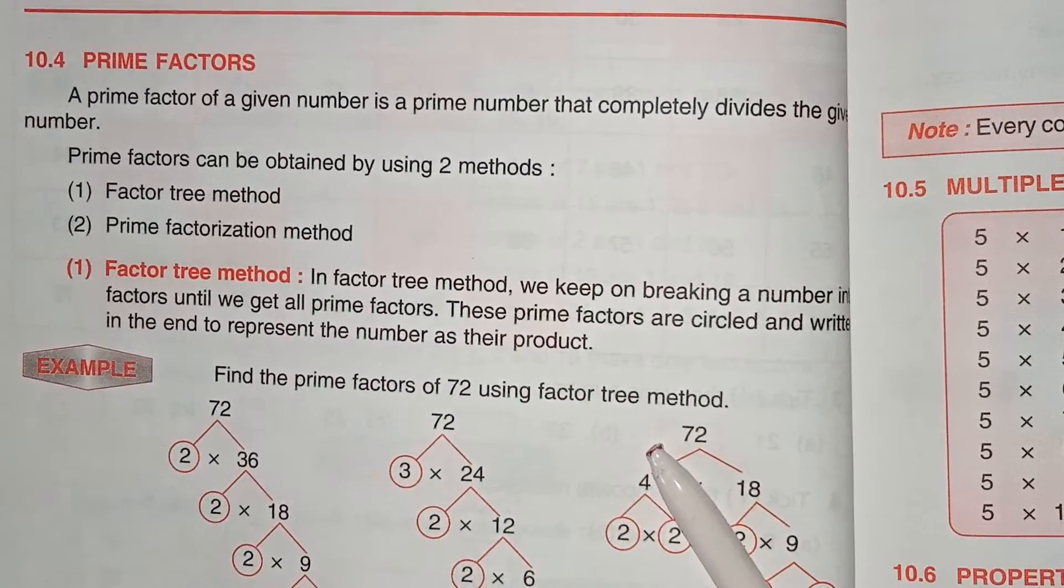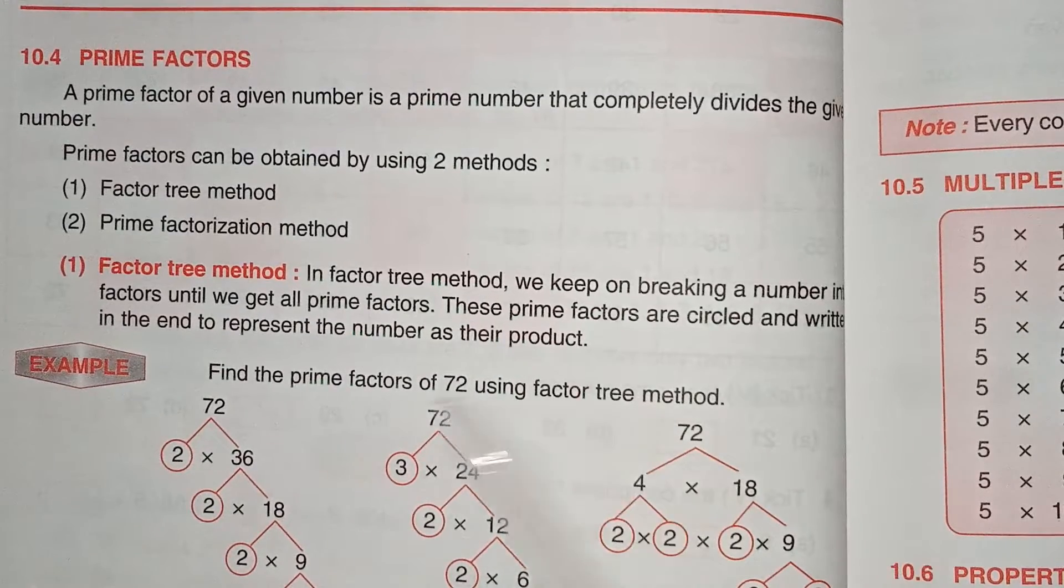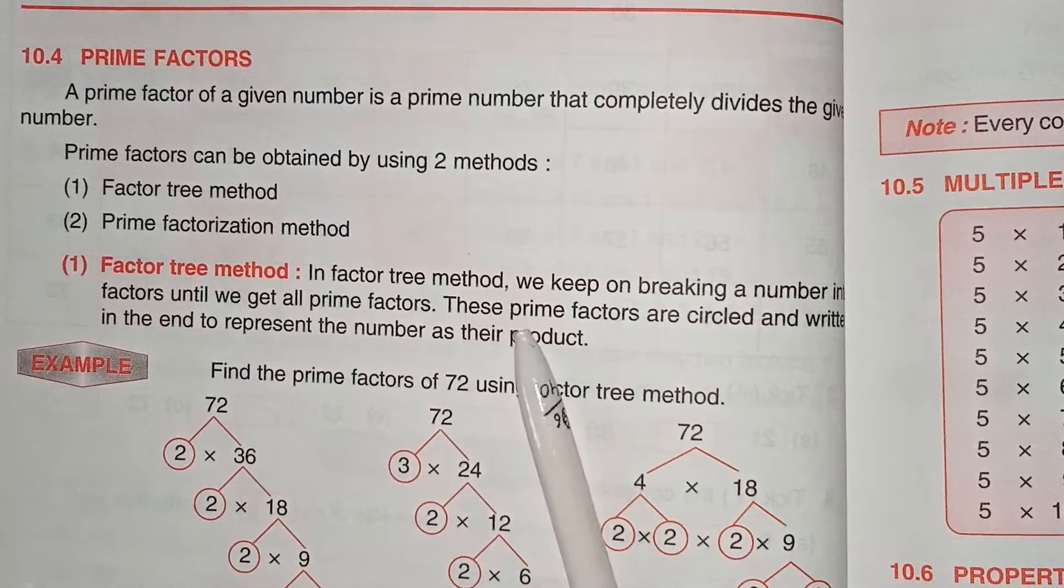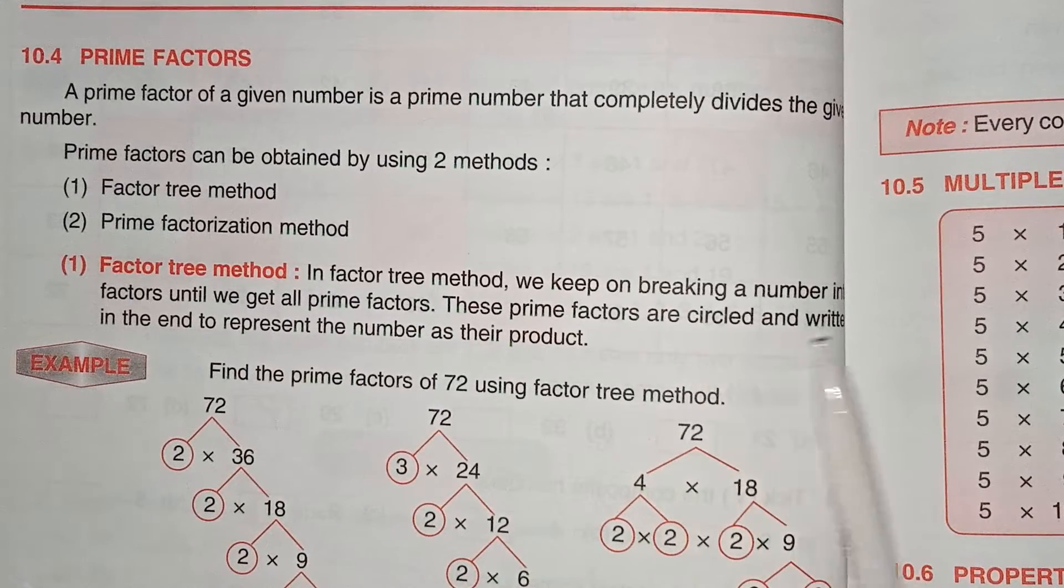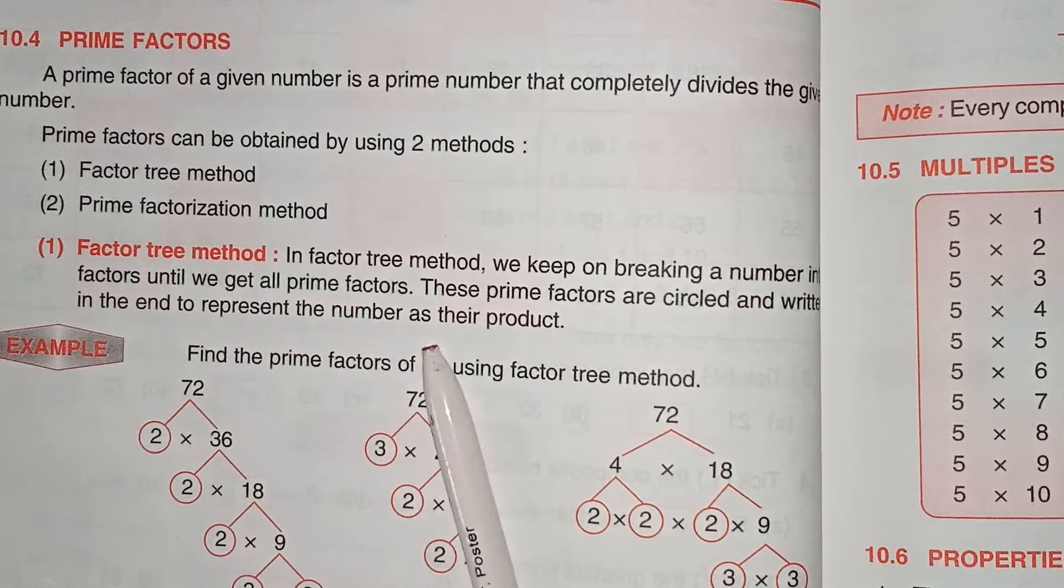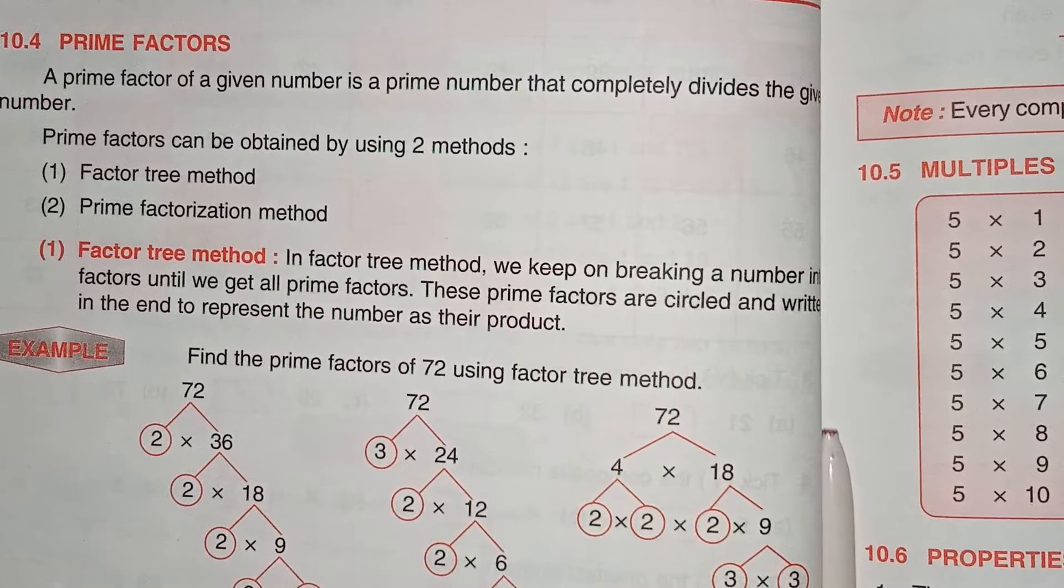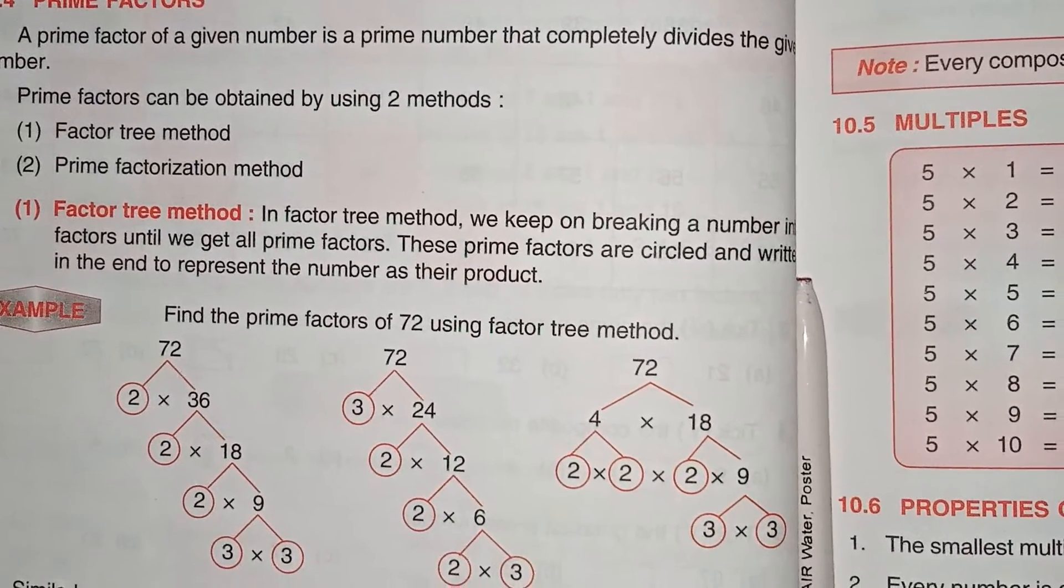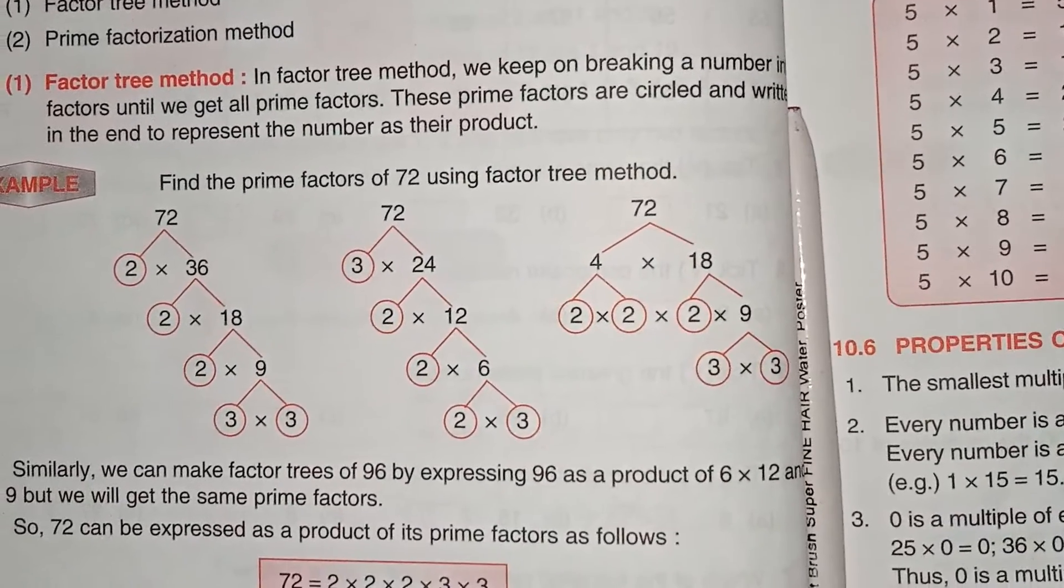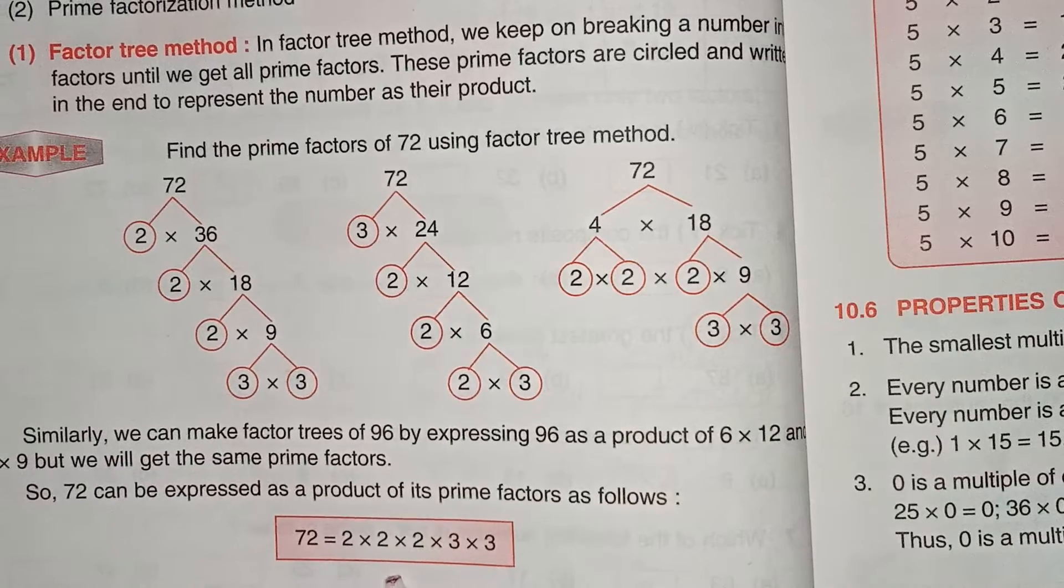In the factor tree method, we keep on breaking a number into factors until we get all prime factors. These prime factors are circled and written in the end to represent the number as their product. Here one example is given. We can see how we can find out prime factors of 72 using factor tree method. And the factors are written as here.